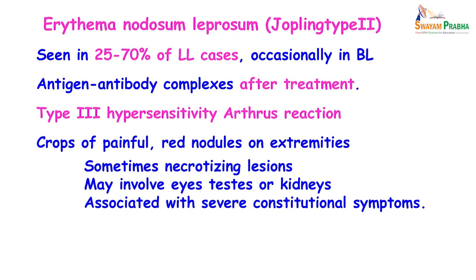Erythema nodosum leprosum is seen in about 25 to 70% of lepromatous cases and very rarely in borderline lepromatous leprosy. It results from antigen-antibody complexes occurring after treatment — a type 3 hypersensitivity, Arthur's type of vasculitis. There are crops of painful red nodules especially on the extremities; sometimes these become necrotizing and are often associated with severe constitutional symptoms.